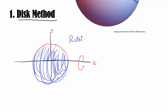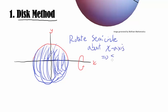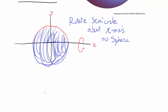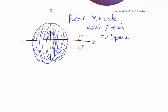So the first realization is: we can rotate a semicircle about the x-axis and obtain a sphere. Now, how can we use mathematics — and this fact about rotation — to find the volume? We start by finding the equation of the semicircle.